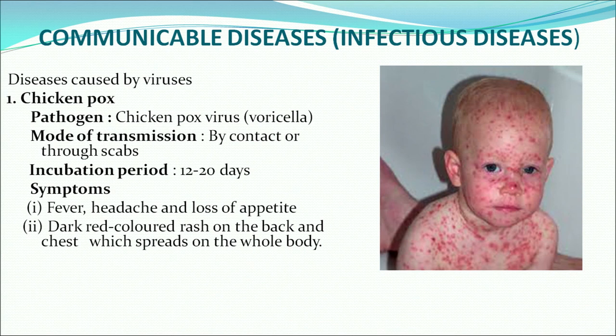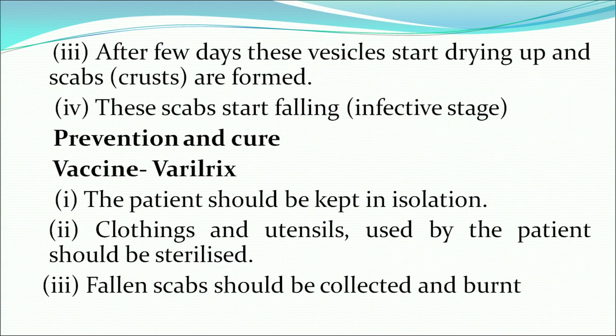What are their pathogens? What is the mode of transmission? What are the symptoms? The first disease we will discuss is chickenpox. Its pathogen is the chickenpox virus called Varicella. Its mode of transmission happens through scabs and the incubation period varies from 12 to 20 days. Symptoms are fever, headache, loss of appetite and dark red colored rashes on the back and chest. It can be prevented through the Varicella vaccine. The patient should be kept in isolation, and clothing and utensils should be sterilized. Fallen scabs should be collected and burnt.